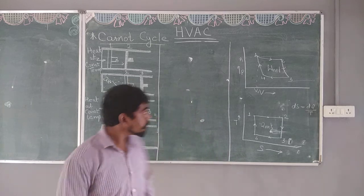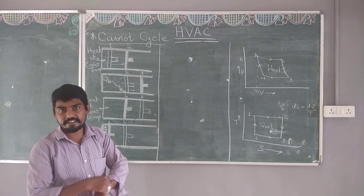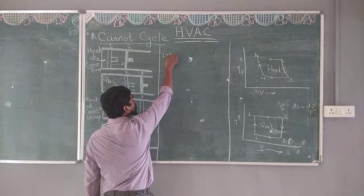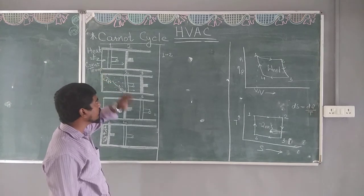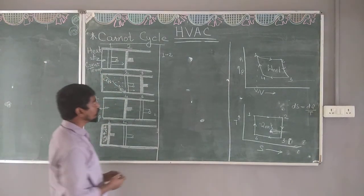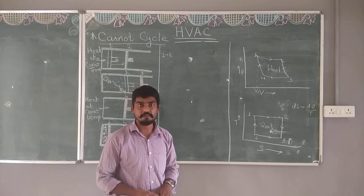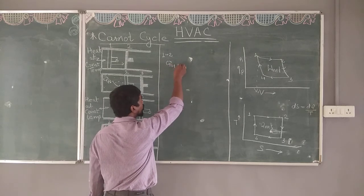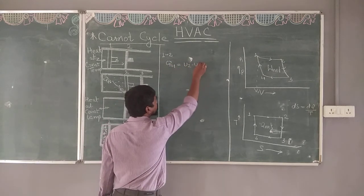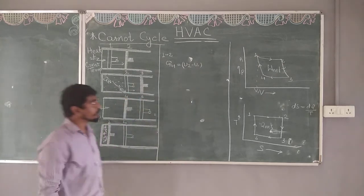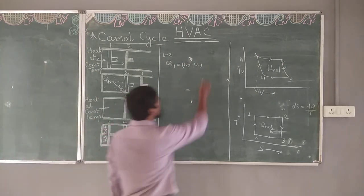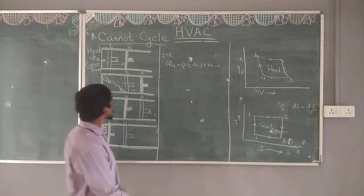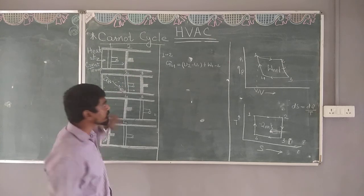Now let us find out how exactly this gives maximum efficiency. Applying the first law of thermodynamics — heat equals change in internal energy plus work done — to process 1 to 2: heat supplied at the higher temperature, QH = (U2 − U1) + W₁₂. As the piston is expanding, work done by the system is positive.